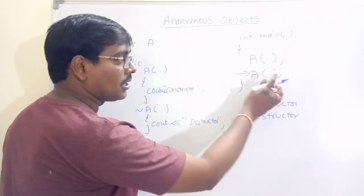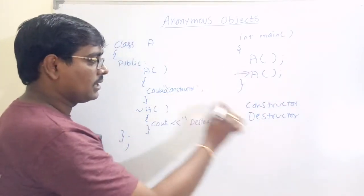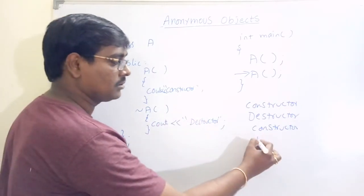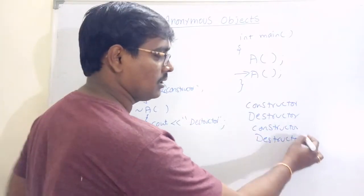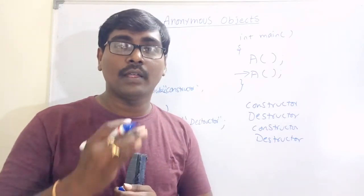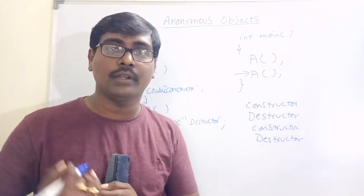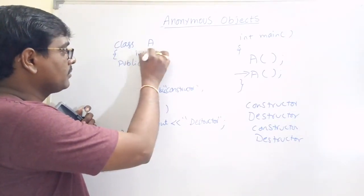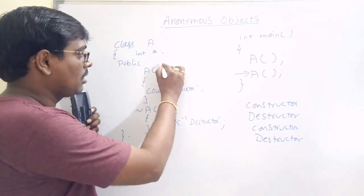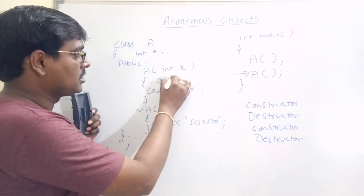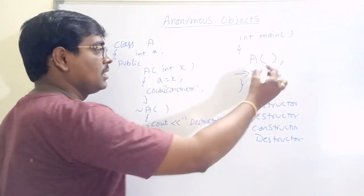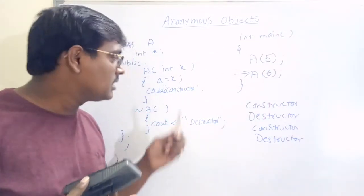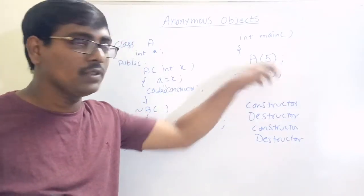After coming out of the particular statement, the scope of the particular object is destroyed. You can also use parameters. For example, a small modification: int x, a = x. You can pass values — here you can pass 5, here you can pass 6. If the constructor contains parameters, no problem — we can pass them within the parentheses.